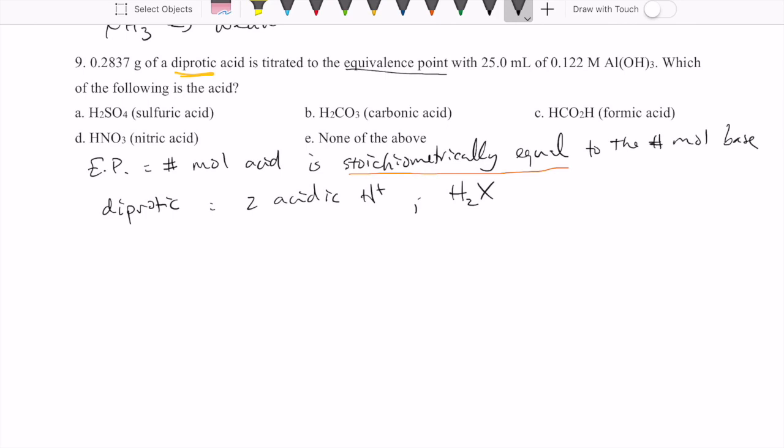Let's write this down as a reaction since we need to do some kind of stoichiometry. H2X is our acid, Al(OH)3 is our base. Double displacement reaction gives us Al2X3 and H2O. Balancing this out, you're going to get 3 for that, 2 for this, and 6 for that.